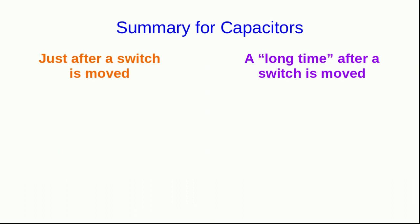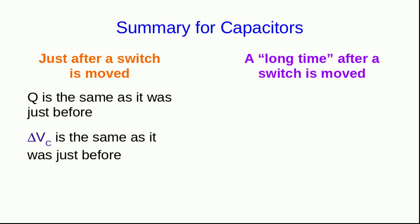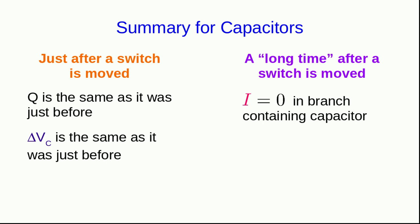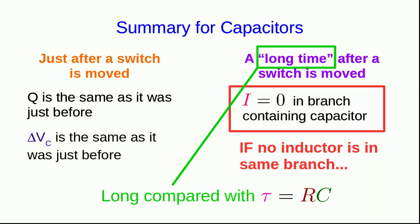To summarize the situation for capacitors: just after you move a switch, the charge on the capacitor must be the same as it was just before you moved the switch, and that also tells you the potential difference across the capacitor will be the same. A long time later, the current will be zero in any branch containing a capacitor — with a caveat: that is not necessarily true if there's an inductor in the same branch as the capacitor. The 'long time' means long compared with some time constant related to the total equivalent resistance and total equivalent capacitance for the circuit.